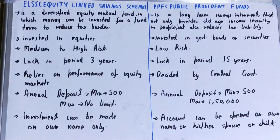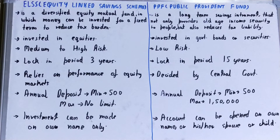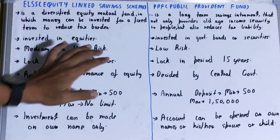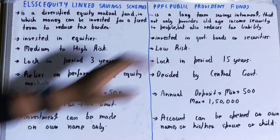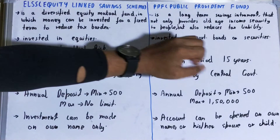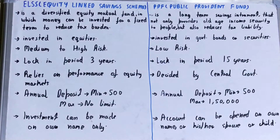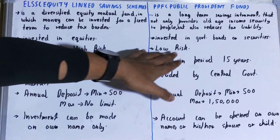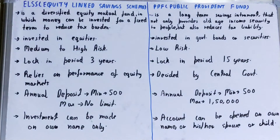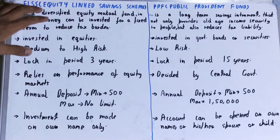Next, if you talk about the risks involved — in case of ELSS, because the money is invested in equities, the direct dependency is on the market, and that's why the risk is medium or high. But if you talk about PPF, the money is invested in government bonds or securities, which is very less risky, and that's why the risk involved is low.